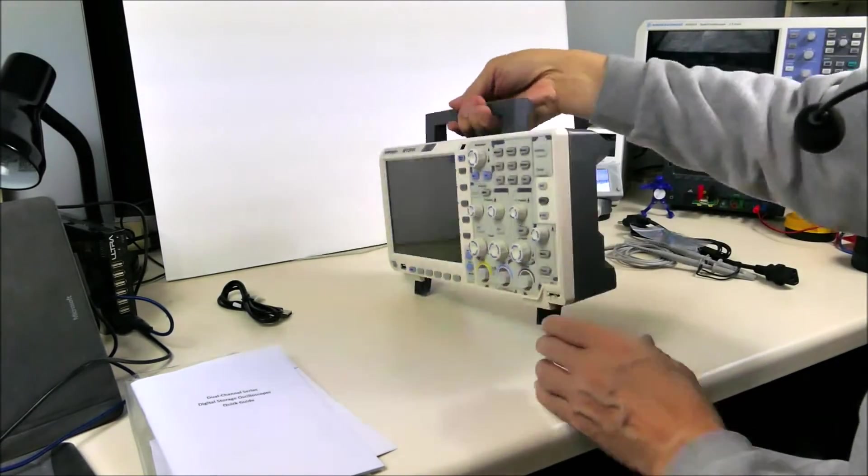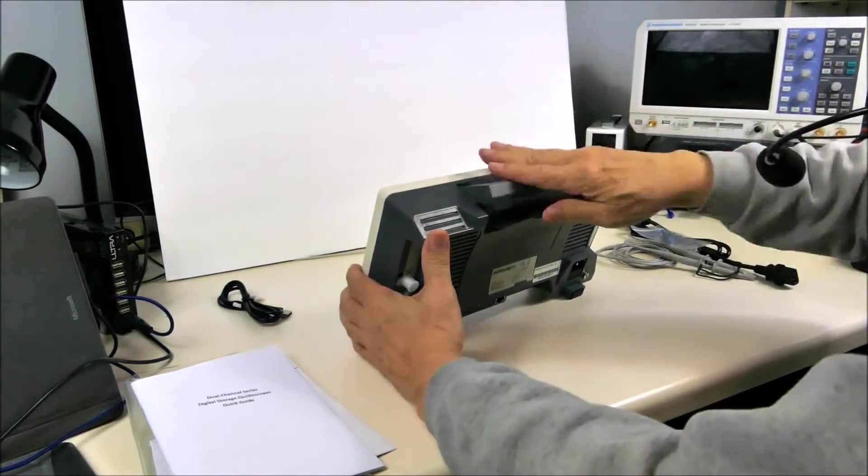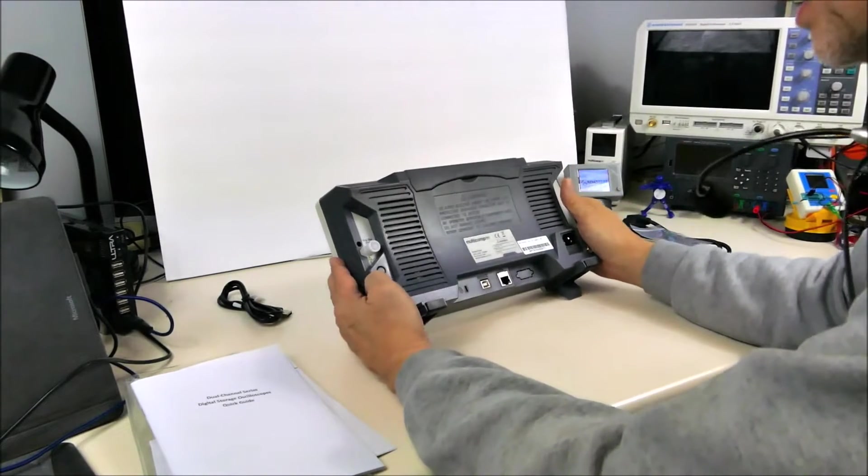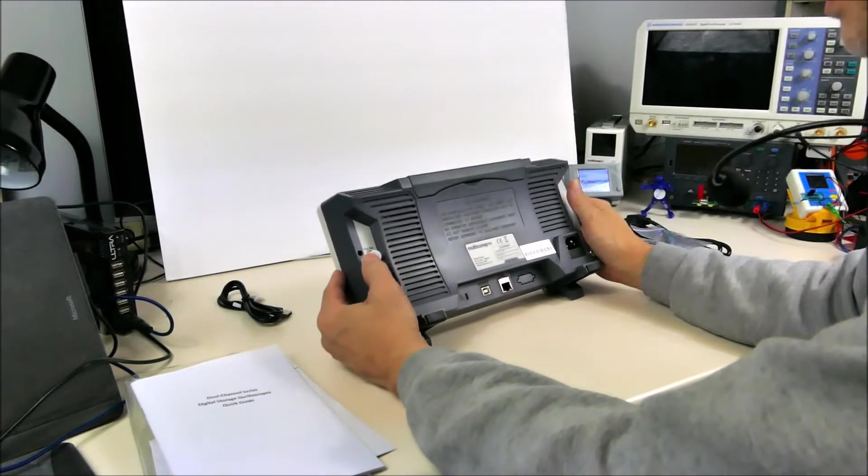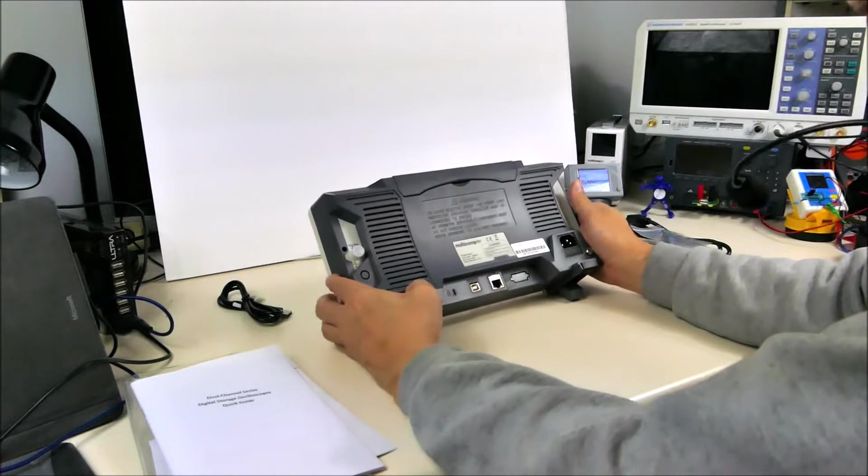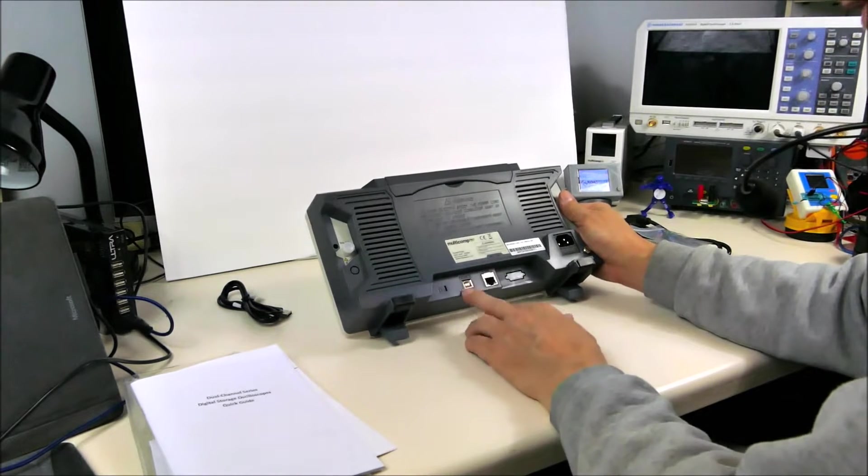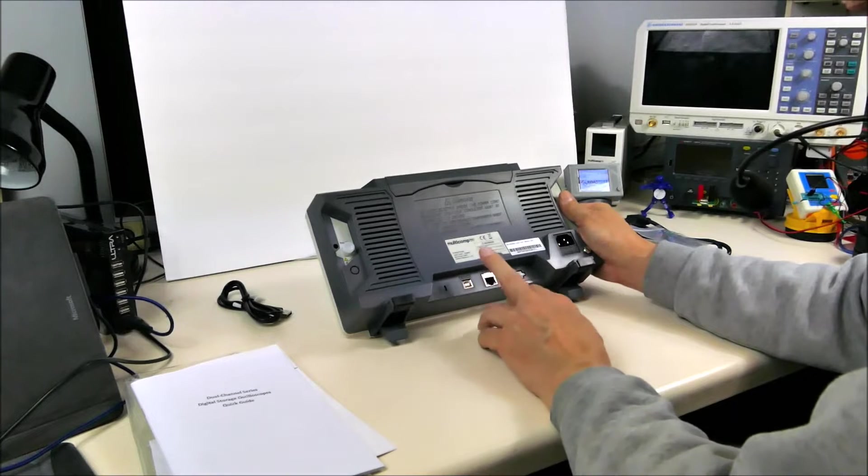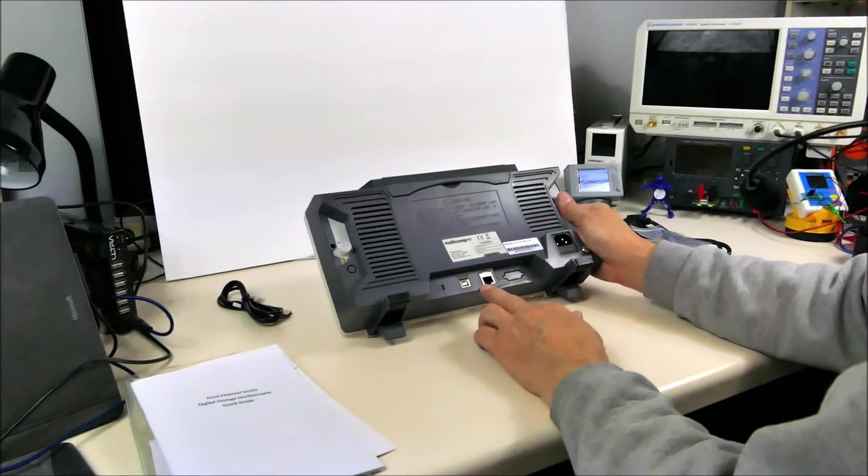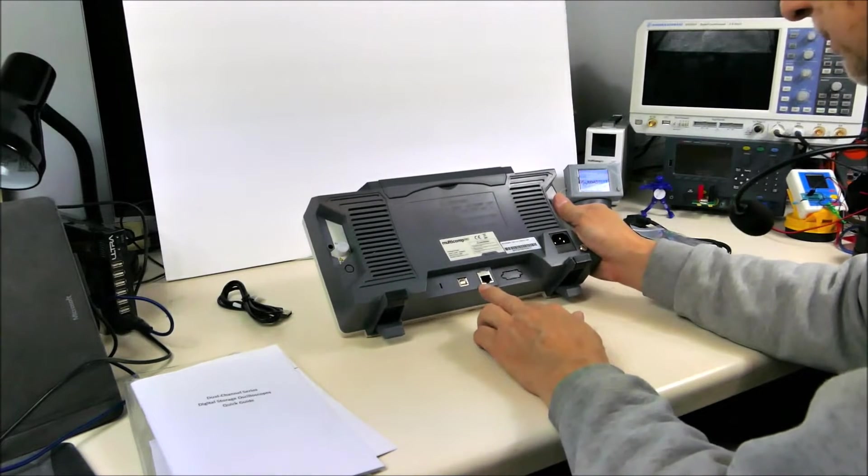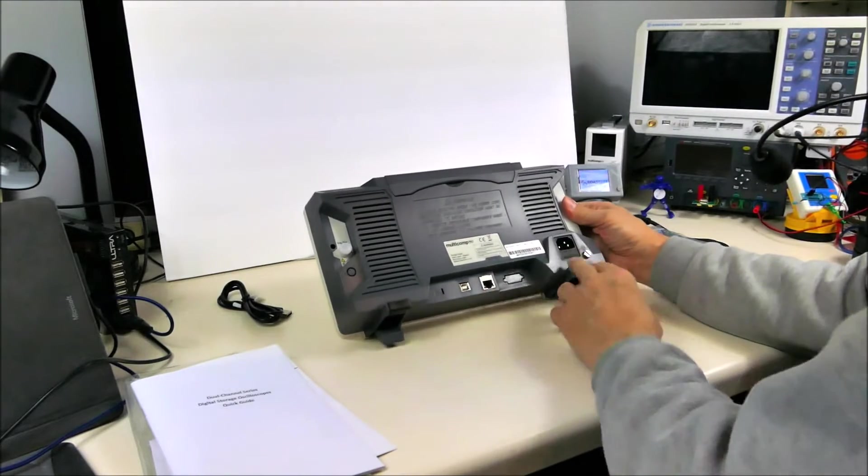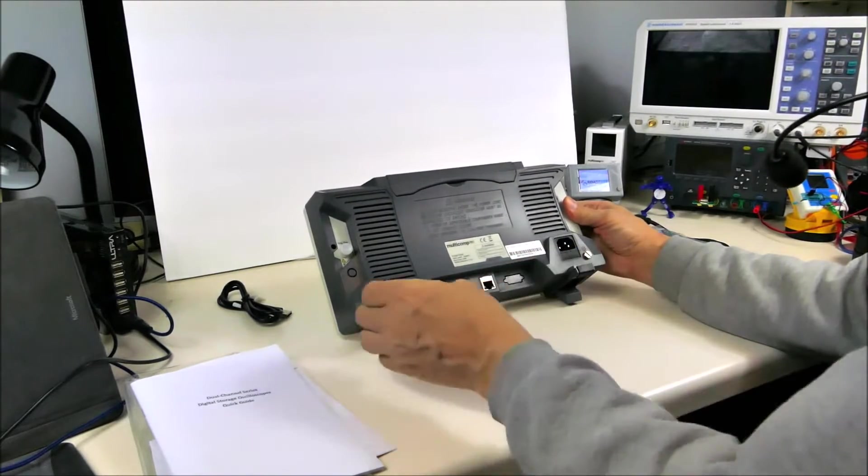Nice carrying handle. In the back, we have a trigger output. We have a locking connector, a USB, and a LAN or Ethernet connection. And the power. And there's a grounding lug back here.